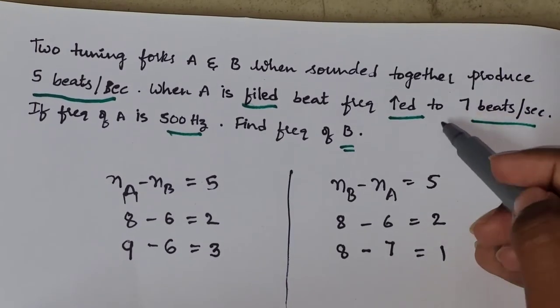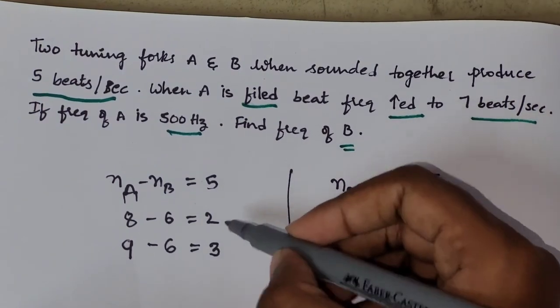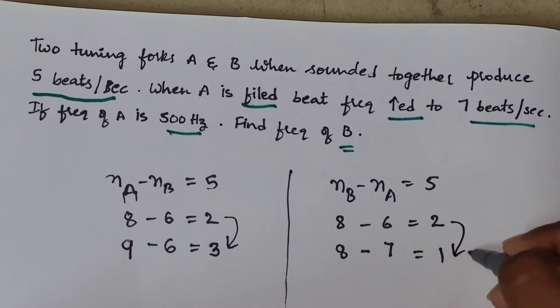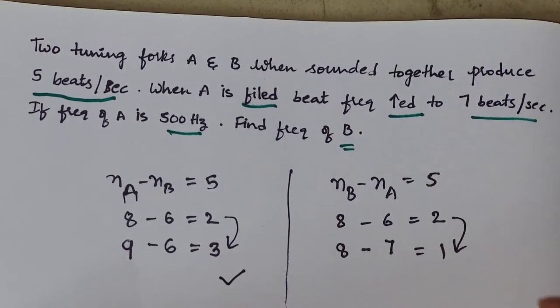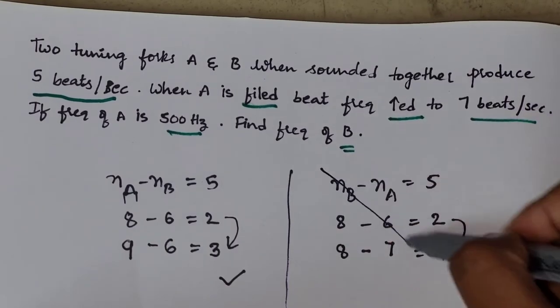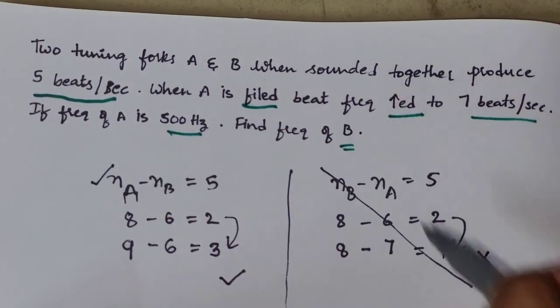Now, again to the question. From 5, it is increasing to 7. So, here also you have to check the increasing case. Which one is the increasing case? The first one is increasing and second one is decreasing, right? So, you neglect this one and do the question by using this one.